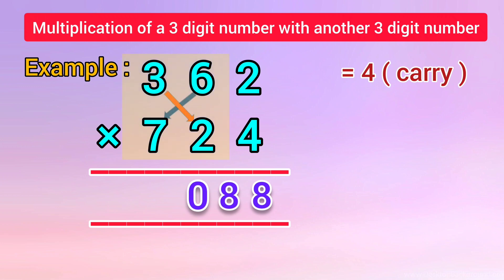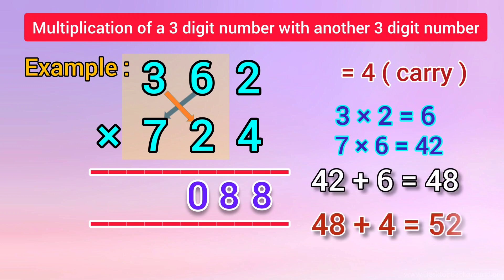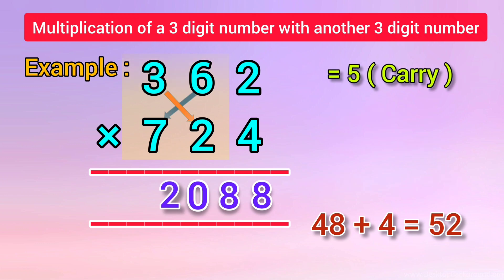In the fourth step, we cross-multiply the digits of the 2 columns from the left side. That is, 3 into 2 is equal to 6, and 7 into 6 is equal to 42. We add both products: 42 plus 6 is equal to 48. We add the 4 carried over from the previous step: 48 plus 4 is equal to 52. We put down 2 and carry over 5 to the next step.